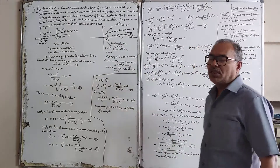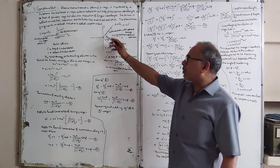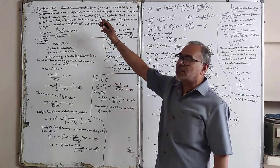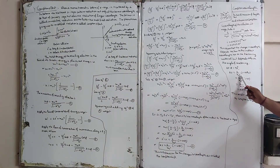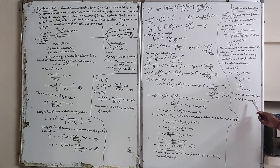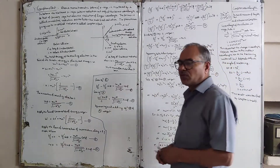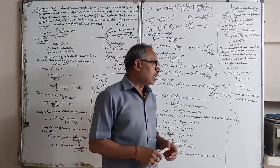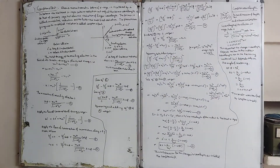For the special case where theta = 90°, cos(90°) = 0, so delta-lambda = h/(m₀c) · (1 − 0) = 0.0243 Å. This result was verified by Compton himself experimentally.